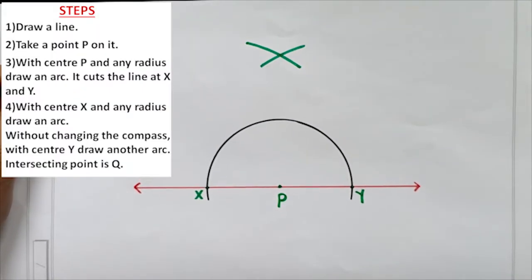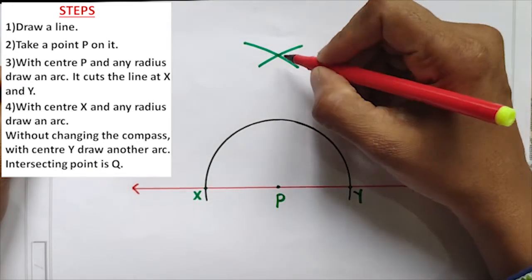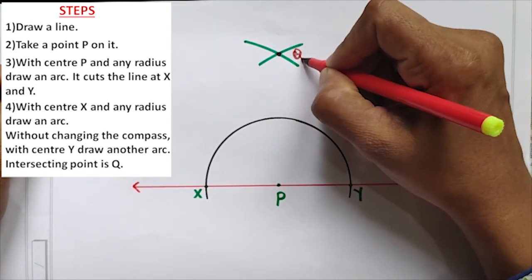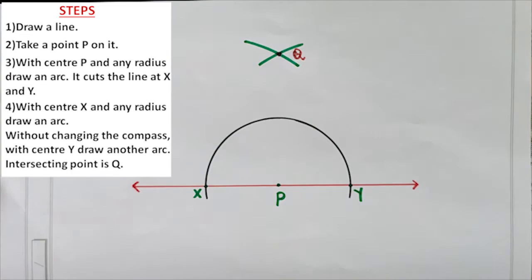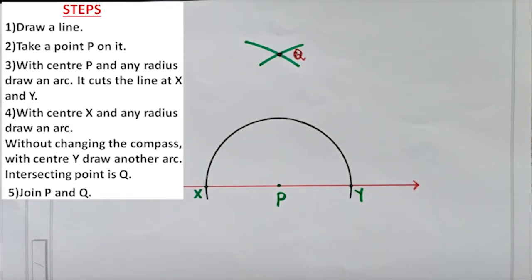It intersects at Q. This point is Q. Join P and Q.